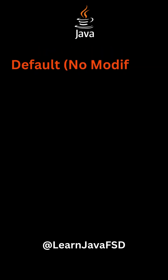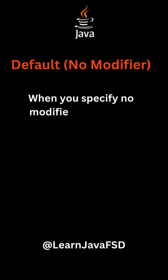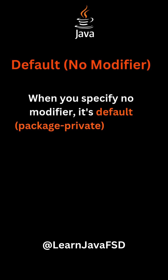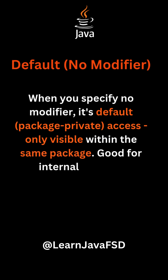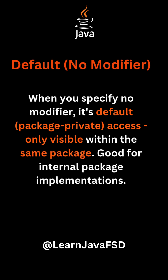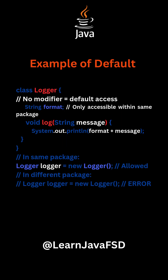Default — no modifier. When you specify no modifier, it's default, or package-private: access only visible within the same package. Good for internal package implementations. Example of default.